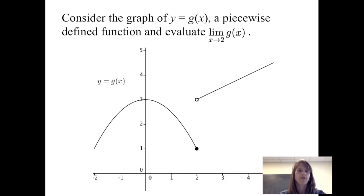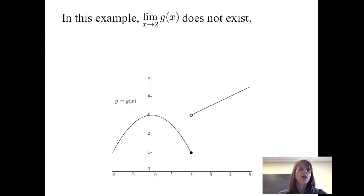Suppose we have the graph of y equals g of x, a piecewise defined function. Let's evaluate the limit of g of x as x approaches 2. In this particular case, the limit of g of x as x approaches 2 does not exist.